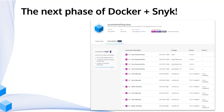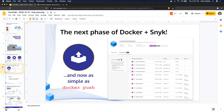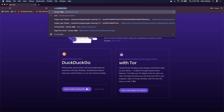The phase we wanted to show everybody today was Snyk integrated into Docker Hub. We've made scanning your images with Hub as simple as Docker push. Once Snyk scanning is enabled in Hub, you can do a Docker push on your image and it'll be scanned in Hub and you'll be able to see your results. Let me jump over to Hub real quick and show some of that.